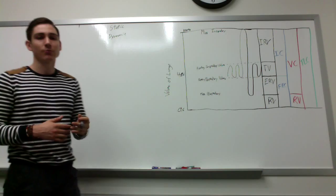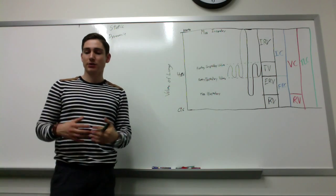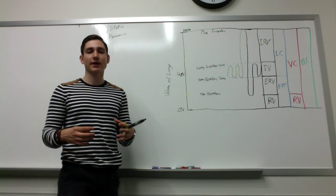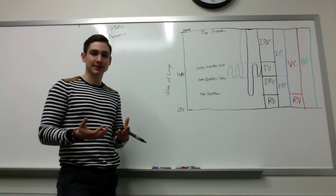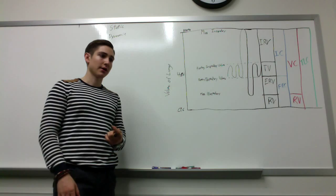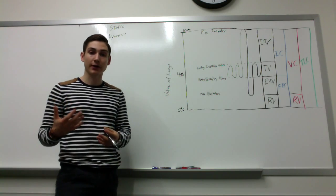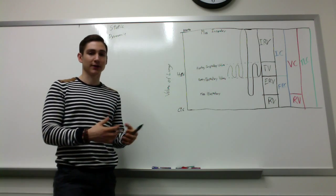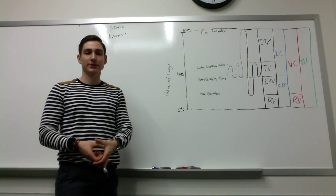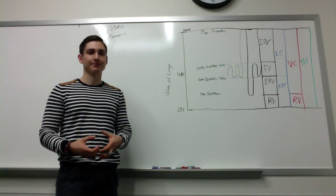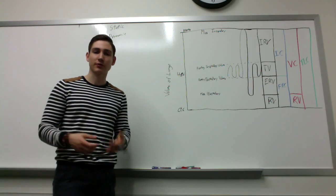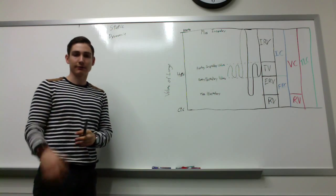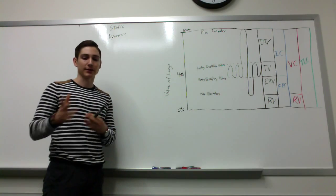For dynamic lung mechanics, you're looking at airflow. It's determined by the strength that the muscles can contract and the resistance of the airflow. As you increase the speed of the air, it ends up being more turbulent, which creates resistance. You can also change the diameter of the airway. There are all sorts of things that affect dynamics, and those will be covered in future lectures.